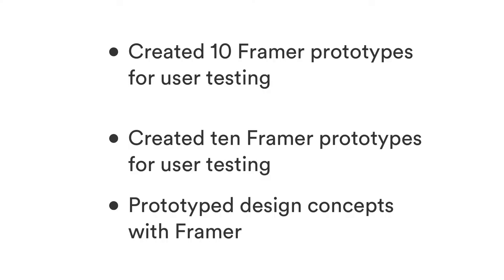If you made 10 prototypes in a project, for example, it's better to put 'created 10 framing prototypes for user testing' versus just saying 'created framing prototypes for user testing' with no number at all. It's cleaner but still gives more specificity to the bullet point without adding a lot of extra words.